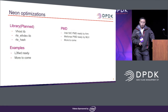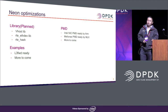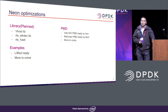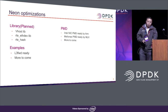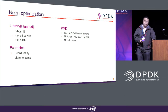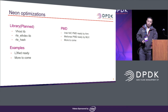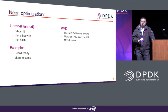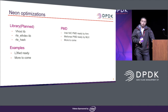The fifth topic is new optimization. The new instructions are ARM's version of SIMD. We have done new optimization for the L3 forwarding example and for an internal NIC PMD. The Marvell PMD has also done this by themselves using these new instructions. This is not a small portion of the whole DPDK source code, so we need to identify more components to use these new optimizations and do benchmarking to see the real performance gains.